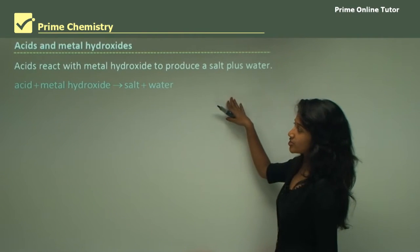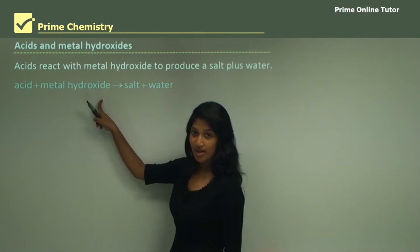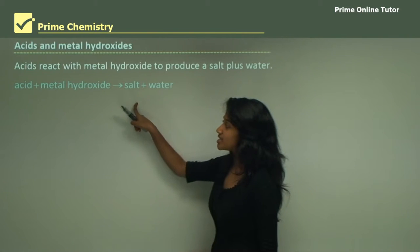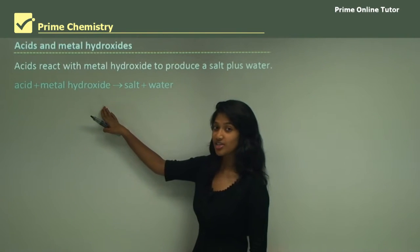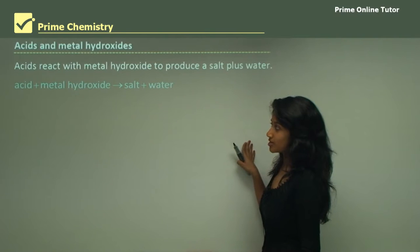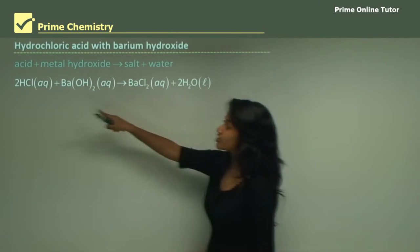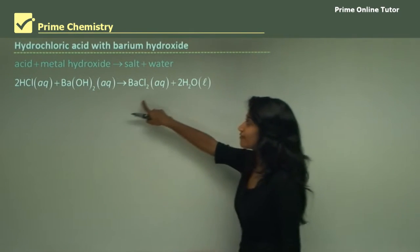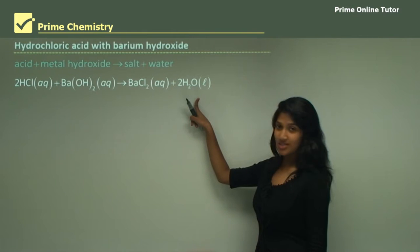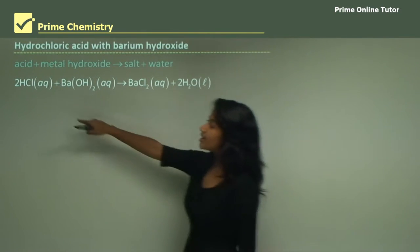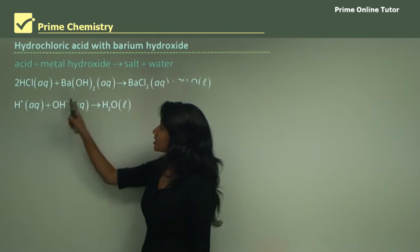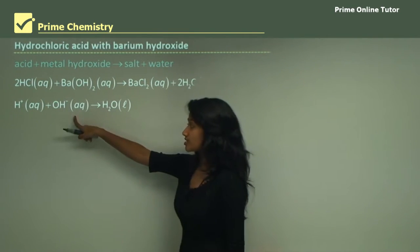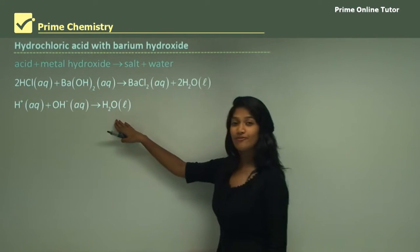Acid and metal hydroxide: an acid reacting with a metal hydroxide produces a salt and water. The composition of the salt depends on the acid and metal hydroxide used. For example, hydrochloric acid reacting with barium hydroxide forms barium chloride and water. The hydrogen ions from the hydrochloric acid and hydroxide ions from the barium hydroxide (which is also aqueous) produce the water.